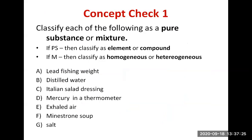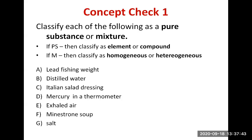Practice: pause before watching the answer. Lead fishing weight — is it a pure substance or mixture? It is made of just lead. Lead is an element found in the periodic table with symbol Pb. So a lead fishing weight is a pure substance and an element, symbol Pb.